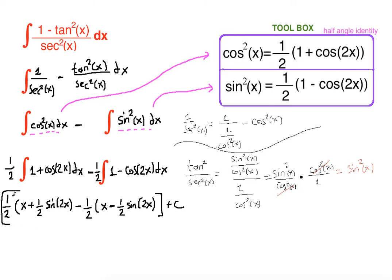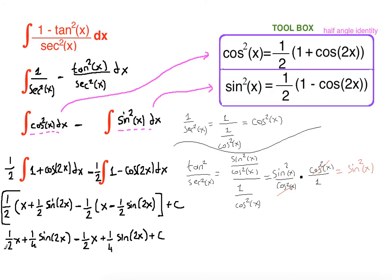We distribute one-half to each parenthesis: one-half times x is one-half x, plus one-half times one-half is one-fourth sine of 2x, minus one-half times x is one-half x, and one-half times one-half is positive one-fourth sine of 2x, plus C. Combining like terms: the positive one-half x and negative one-half x cancel out, and one-fourth sine 2x plus one-fourth sine 2x equals one-half sine of 2x plus C. This is the final answer — let's box it.